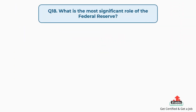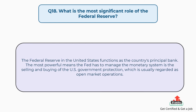Question number eighteen: what is the most significant role of the Federal Reserve? The answer is, the Federal Reserve in the United States functions as the country's central bank. The most powerful means the Fed has to manage the monetary system is the buying and selling of U.S. government securities, which is usually referred to as open market operations.